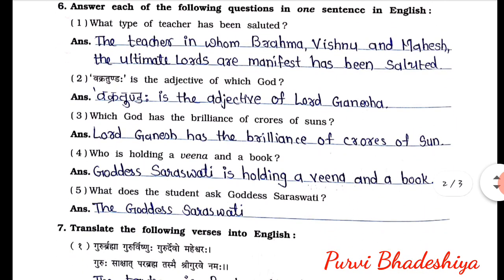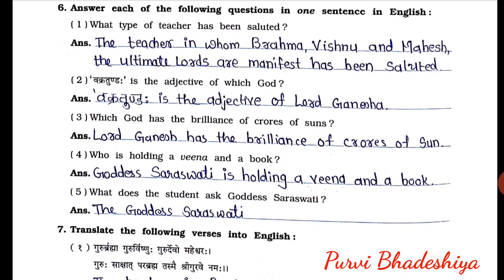Exercise number six: answer each of the following questions in one sentence in English. First one: what type of teacher has been saluted? The teacher in whom Brahma, Vishnu and Mahesh — the ultimate lords — are manifest, has been saluted. Second one: Vakratundaha is the adjective of which god? Vakratundaha is the adjective of Lord Ganesha.